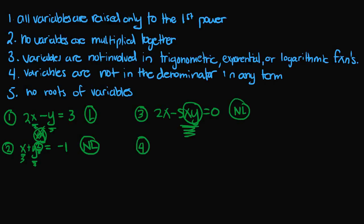Example 4: sine of 3π over 2, times x, plus y is equal to negative 2. We do have a sine function here, but the value inside the parentheses of sine is just a constant number — 3π over 2. So sine of 3π over 2 is just some number, and that number is multiplied times the variable x. Since it's just a coefficient times x plus y, this is actually a linear equation.